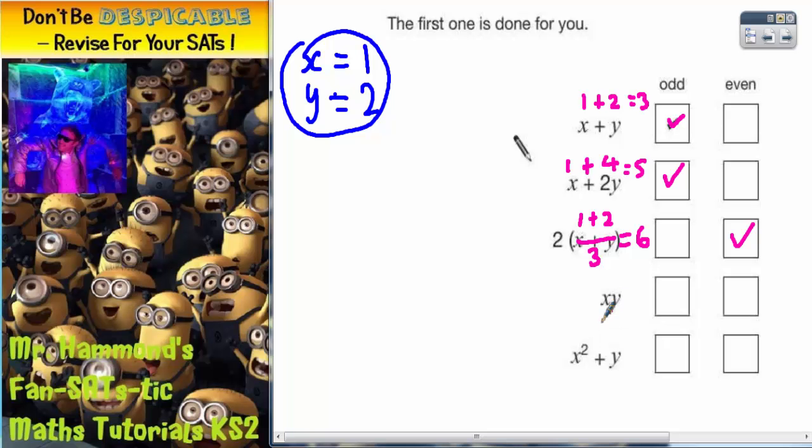The fourth expression, we've got xy. Remember there's an invisible times sign in there. So this means x times by y and x is 1 and y is 2. So it means 1 times by 2. 1 times by 2 is 2 and this is even.